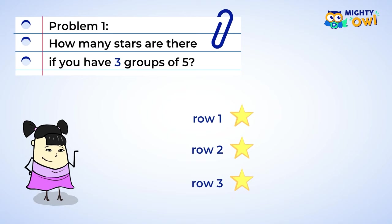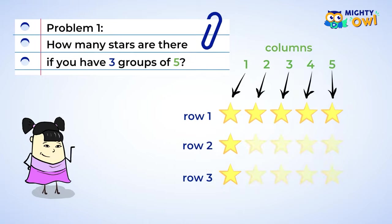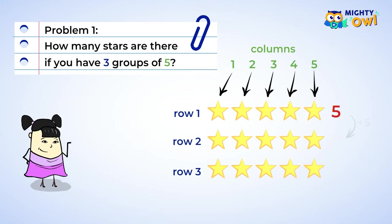To create an array, you would need three rows. Awesome. You know that each group has five stars. That means you need five columns. Great work. Fill in the rest of the rows to have three groups of five.